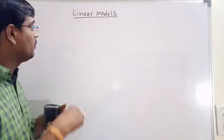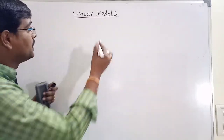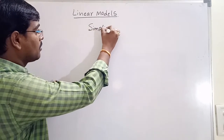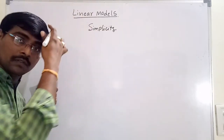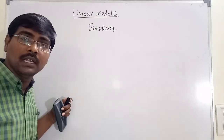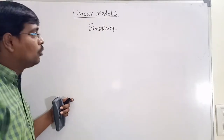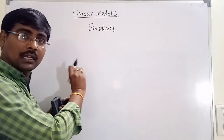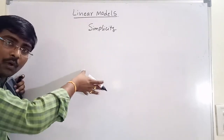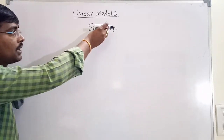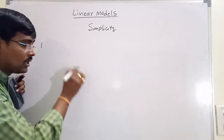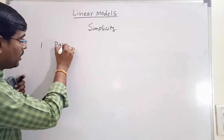Because of the simplicity, linear models play an important role. How does this simplicity occur? There are some manifestations — some points for the occurrence of simplicity. The first is that linear models are parametric.